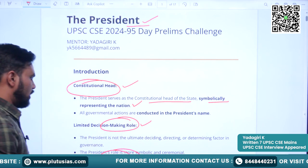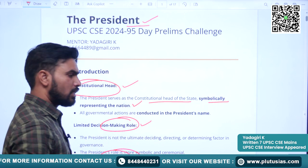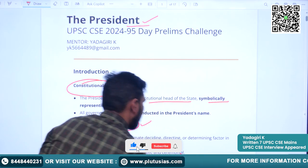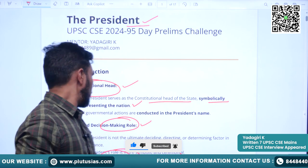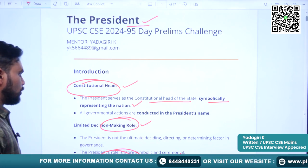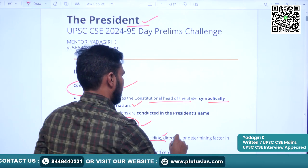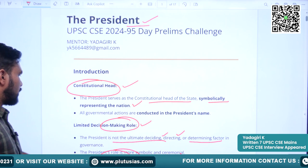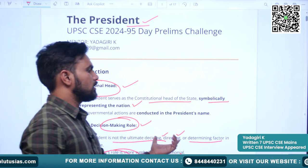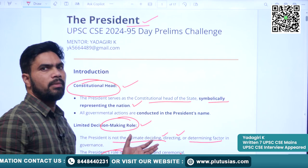He is a de jure authority. The Council of Ministers headed by the Prime Minister is the de facto authority. The President is not the ultimate determining factor in governance. All these things will be done by the Council of Ministers headed by the Prime Minister.